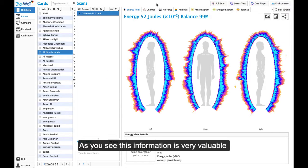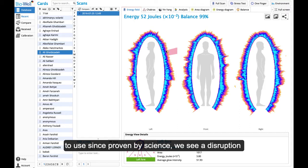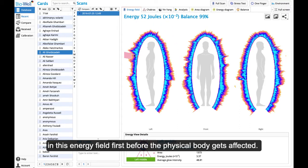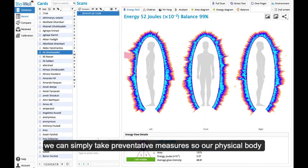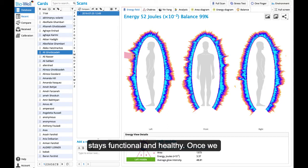This information is very valuable to use since, proven by science, we see a disruption in this energy field first before the physical body gets affected. So if you see imbalances in energy, we can simply take preventative measures so our physical body stays functional and healthy.